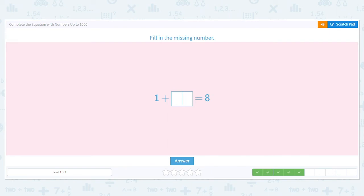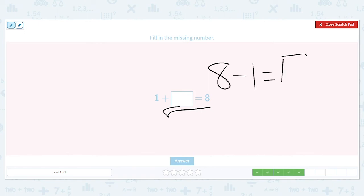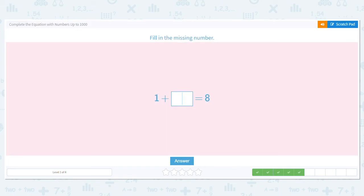Next one. 1 plus blank equals 8. Now, the blank number, the number we're trying to find, is in the middle this time. Can I still use subtraction to find that missing number? Absolutely. It doesn't matter if your missing number is here for the addition problem or here. We can still use subtraction. What will I subtract? We're still working backwards. So it will be 8 minus 1. What is 8 minus 1? It's 7. So I'm going to take that 7, I'm going to put it in the box. And then I'm going to check, is 1 plus 7, 8? Absolutely. So we put 7 in that box.